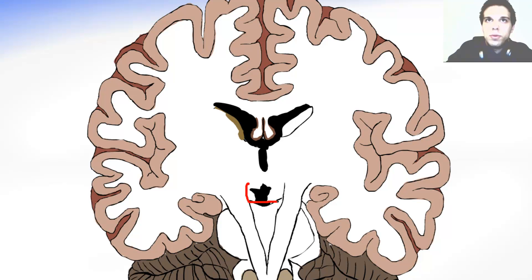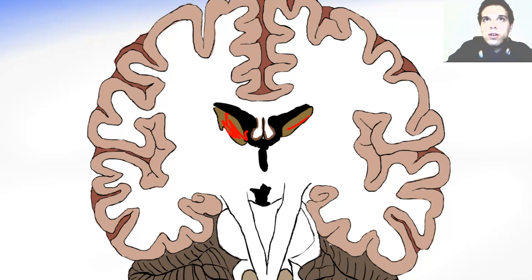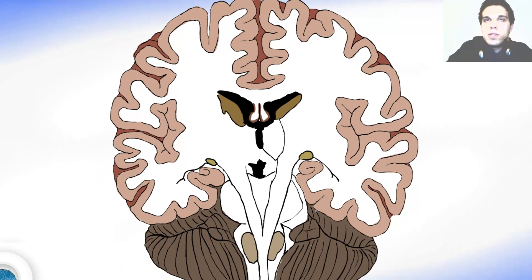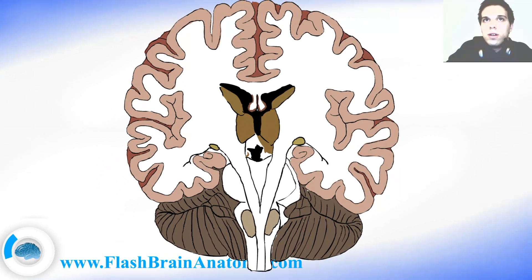This was the interpeduncular fossa. Then, of course, we have the caudate nucleus on both sides over here and here. And down there, you can notice the optic tracts — this is the optic tract, and this is the optic tract. Then we have the thalamus creating the walls of the third ventricle.